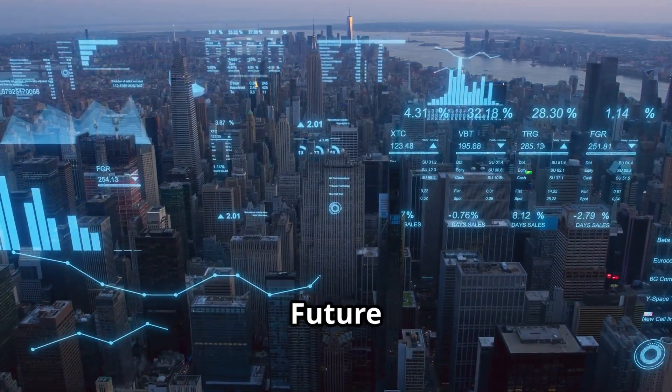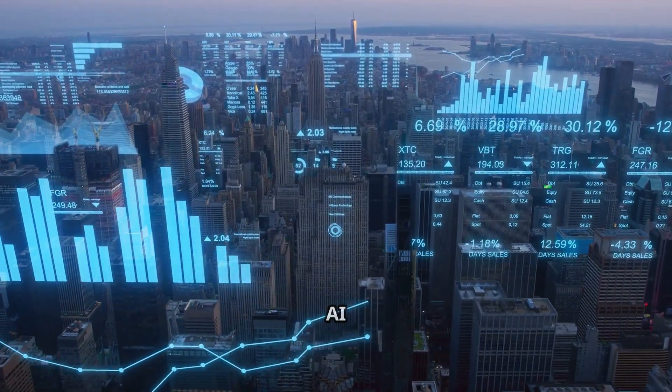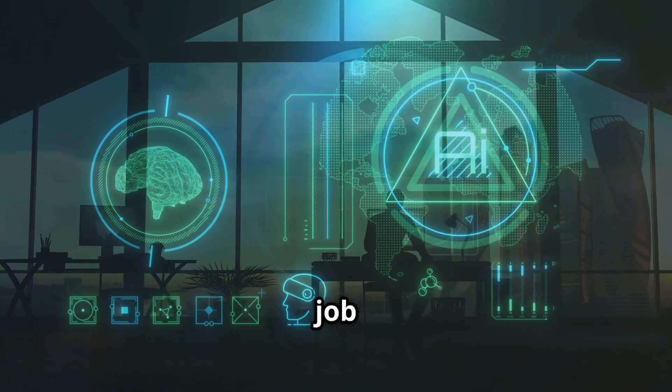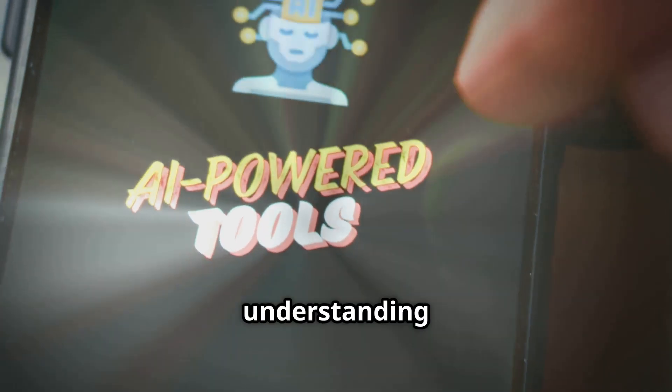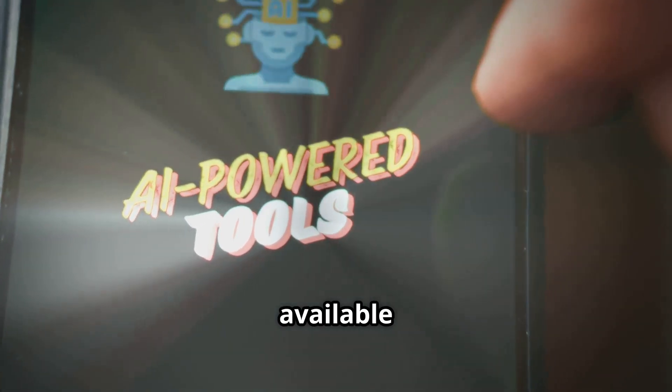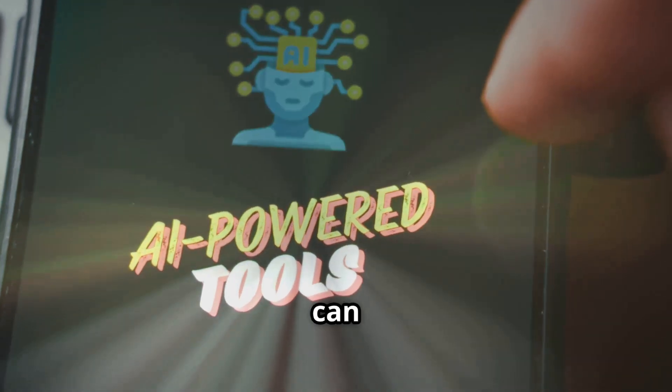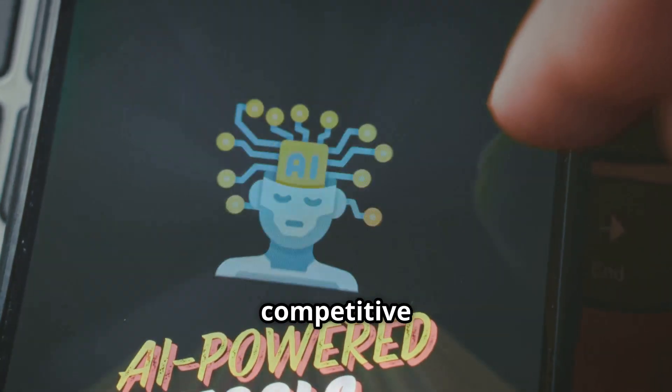Section 8: The Future of Job Hunting - Embrace the AI Revolution. AI is transforming the job search process. By understanding the different types of AI tools available and how to use them effectively, you can gain a significant advantage in the competitive job market.